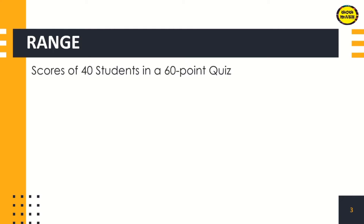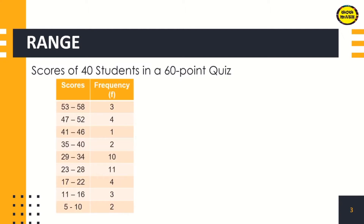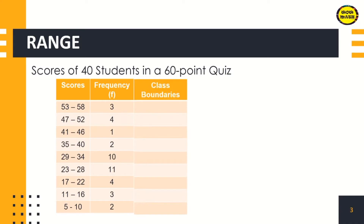Let us try, for example, the score of 40 students in a 60-point quiz. We have here a frequency distribution with the class scores and the frequency. First thing we're going to identify is the class boundaries. How are we going to identify the class boundaries?